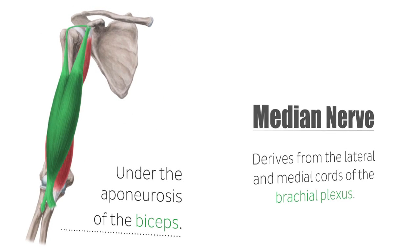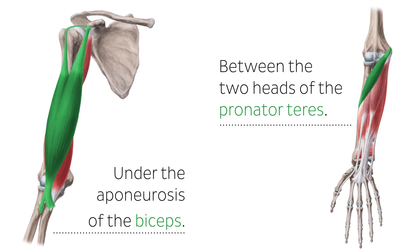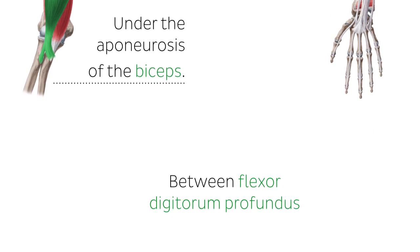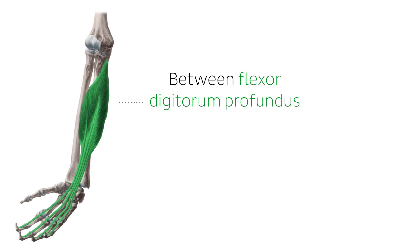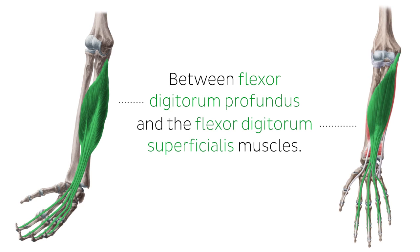At the elbow, it continues its course under the aponeurosis of the biceps and between the two heads of the pronator teres. Once it gives off the anterior interosseous branch, it initiates its trajectory in the forearm between the flexor digitorum profundus and flexor digitorum superficialis muscles, serving as their supply.